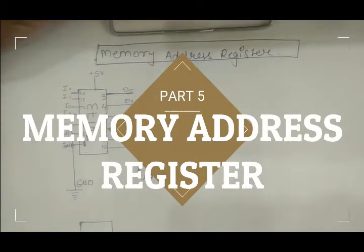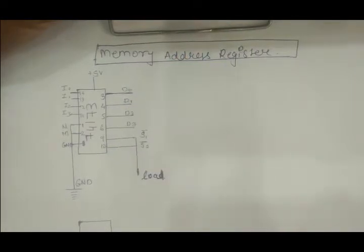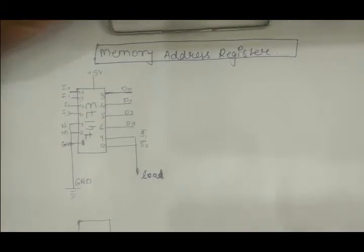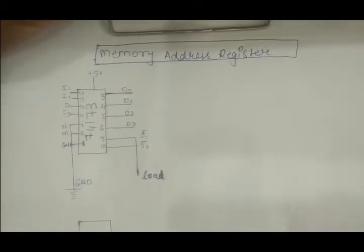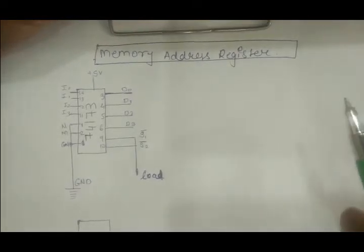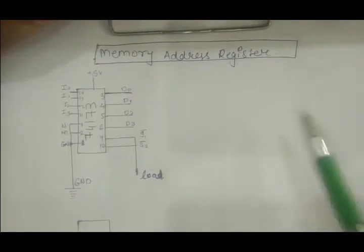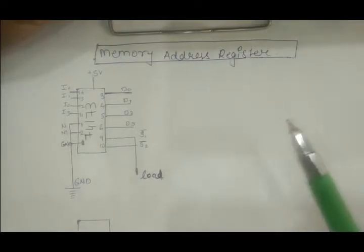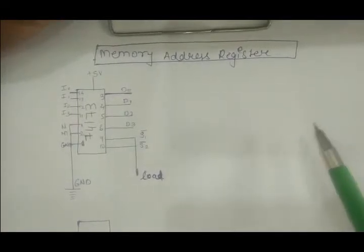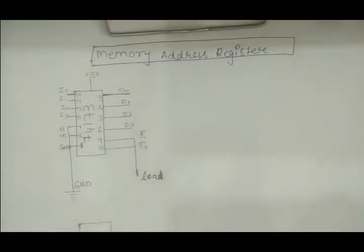The function of the memory address register is to select the address from memory. The RAM will output the value from the address selected by the memory address register. The data at the address pointed to by the MAR will be output on the bus and given as an input to the instruction register, and the further process will be carried out.